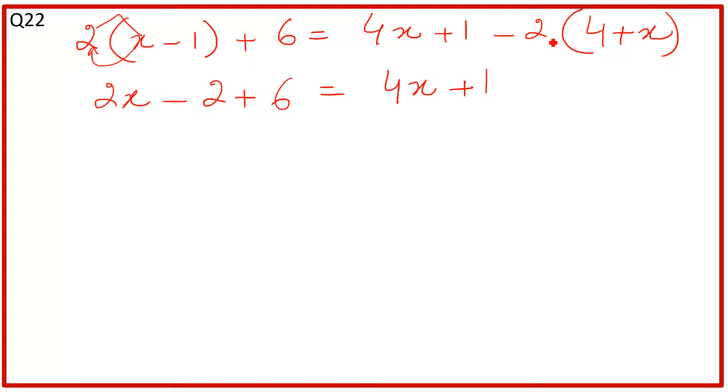This is negative 2. If you have a negative sign in front, all the signs inside the parenthesis will change. So it's positive 4 but becomes negative 8, and positive x becomes negative 2x. The left side, 2x - 2 + 6, remains as is.